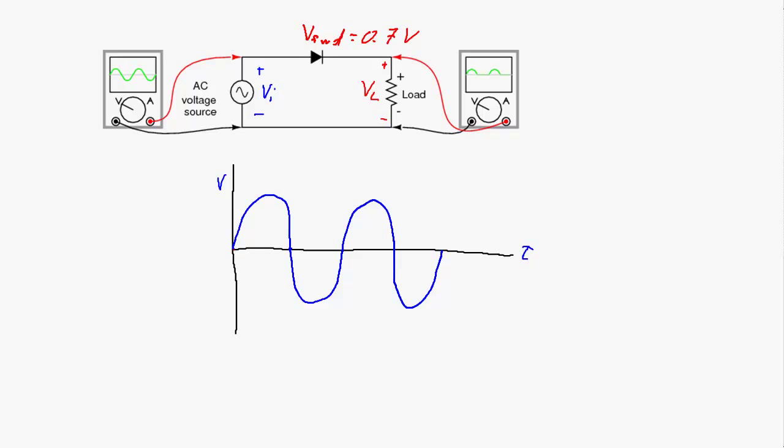So here's what the output looks like on the positive cycle. At this point, the diode becomes forward biased, and the output will then follow the input but be about 0.7 volts less than the input because of the forward bias voltage across the diode.